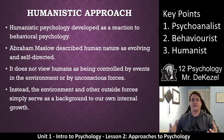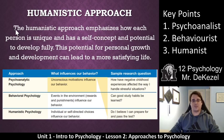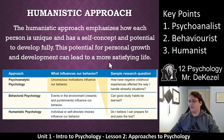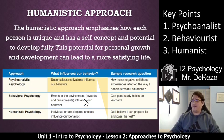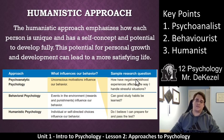The fundamental difference is: does the person act on the environment, or does the environment act on the person? The humanistic approach emphasizes how each person is unique, has a self-concept, and the potential to develop fully. This potential for personal growth and development can lead to a more satisfying life. Maslow had interesting ideas about how behavior identifies who you are. You can see below a diagram that's in your booklet — you don't need to copy it down, but it summarizes a lot of what we've talked about today, including what questions each approach would ask and what they believe influences our behavior. Make sure you highlight some important points from there.